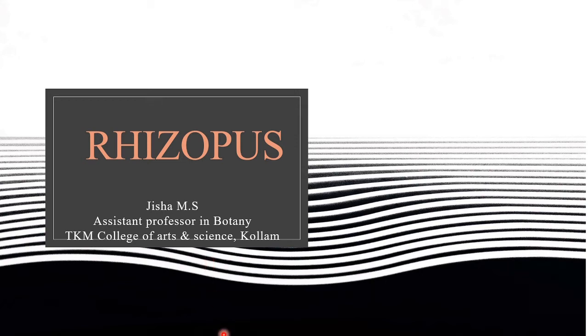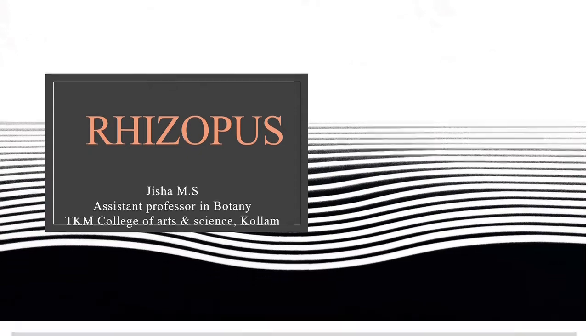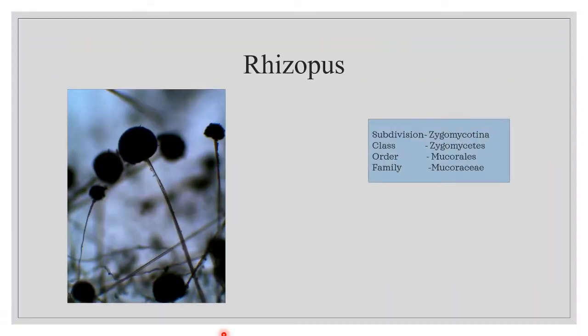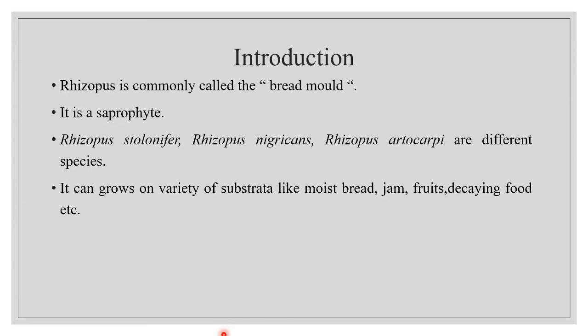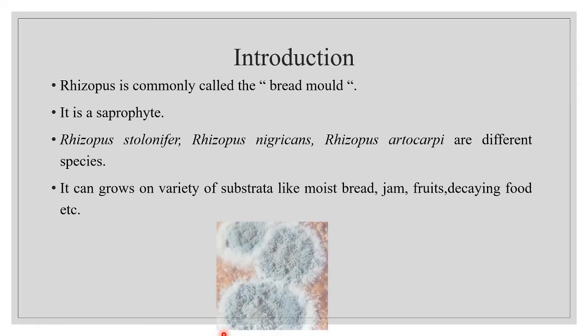Welcome everyone. Today we will learn about Rhizopus, the fungus which belongs to the subdivision Zygomycotina, class Zygomycetes, order Mucorales, and family Mucoraceae. Rhizopus is a saprophytic fungus found growing on moist bread, jam, fruits, decaying food, etc. It is commonly called bread mold, as it is often found growing on moist bread. The most common species are Rhizopus stolonifer, Rhizopus nigricans, and Rhizopus oryzae.